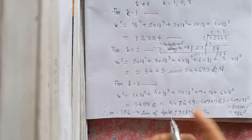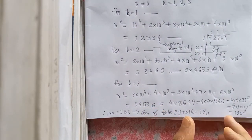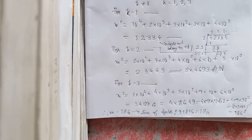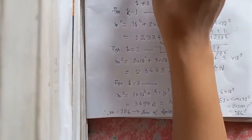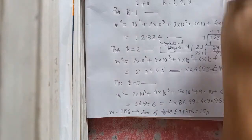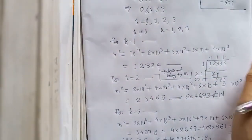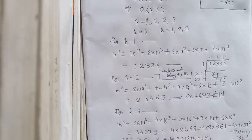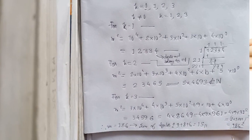For k=3: m squared equals 3, 4, 5, 9, 6 — that is 34596. Taking the square root, we get 186. So m equals 186. Now find the sum of digits of m: the digits are 1, 8, and 6. So 1 plus 8 plus 6 equals 9 plus 6, equal to 15. Therefore the answer is 15.